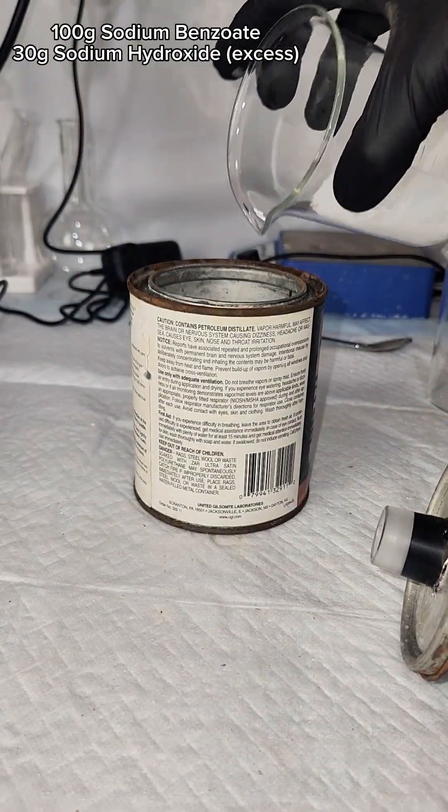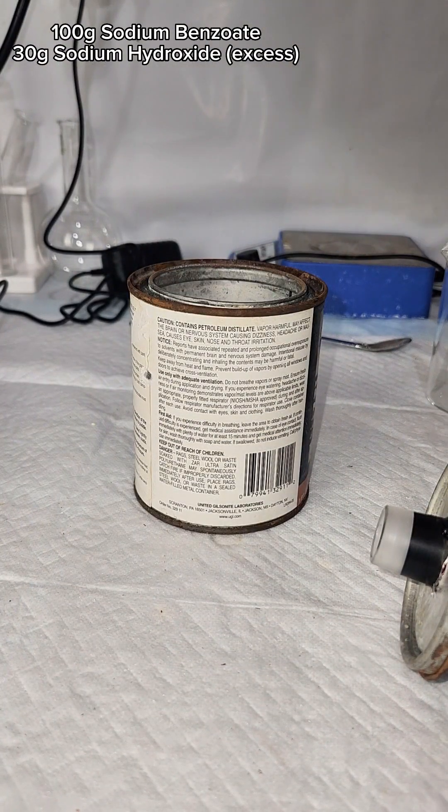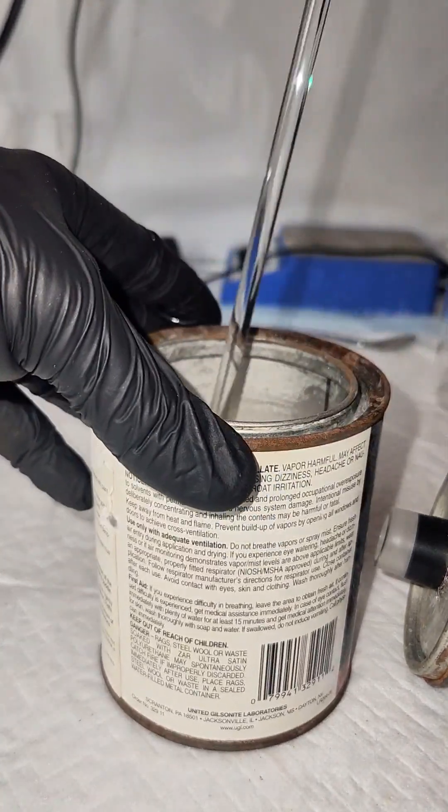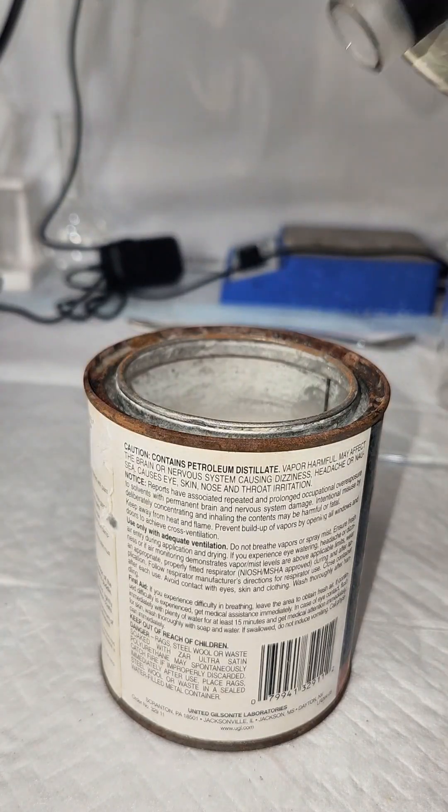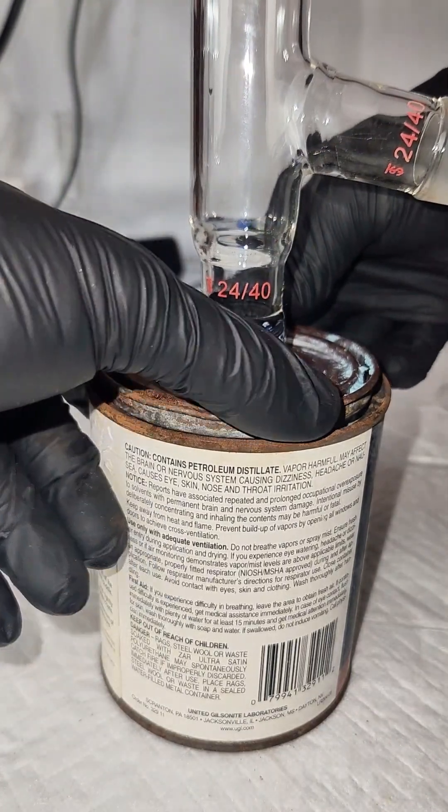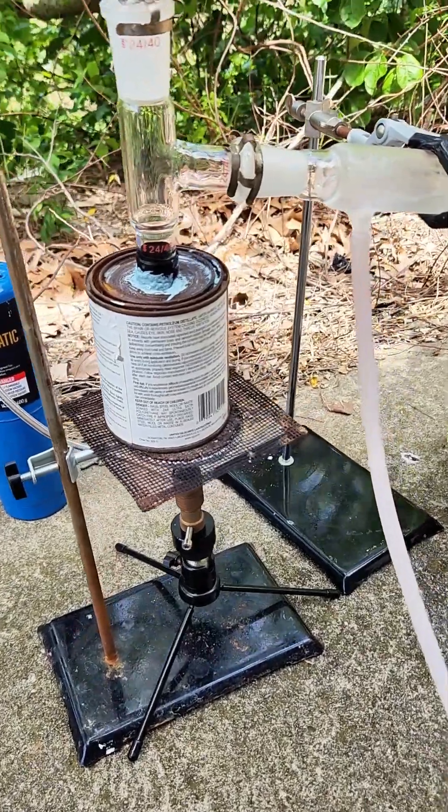To get started, I mixed together 100 grams of sodium benzoate and 30 grams of sodium hydroxide in an old steel paint can. The paint can is going to act as my reaction vessel, and I'm using it because this process would completely destroy my expensive glassware.